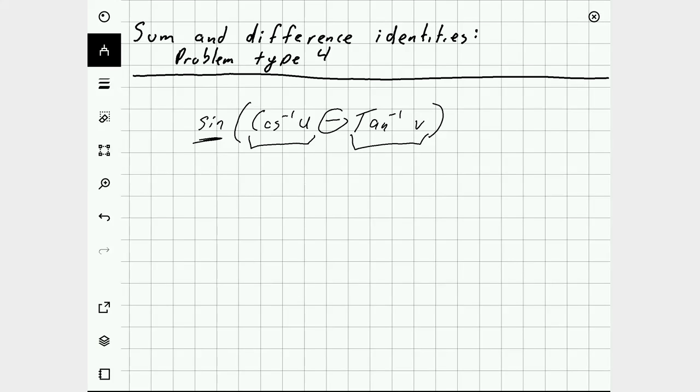Since we're talking about sum and difference identities, I'll remember that the sine of alpha minus beta is sine alpha cosine beta minus cosine alpha sine beta. And in this particular case, alpha is the inverse cosine of u, and beta is the inverse tangent of v.